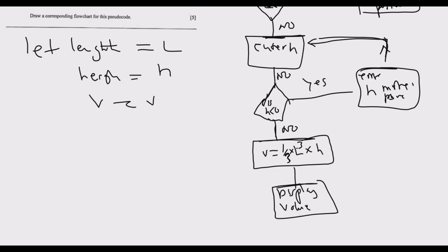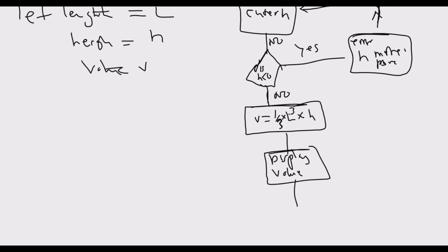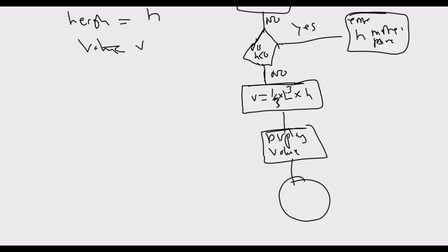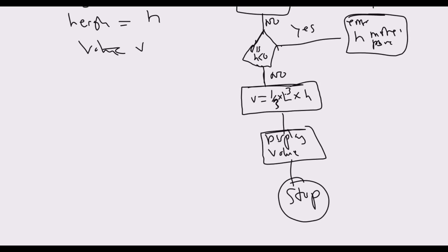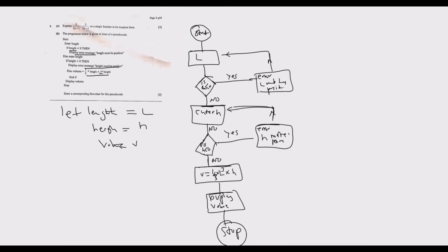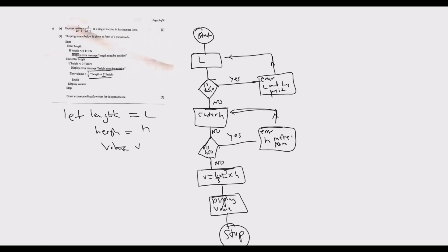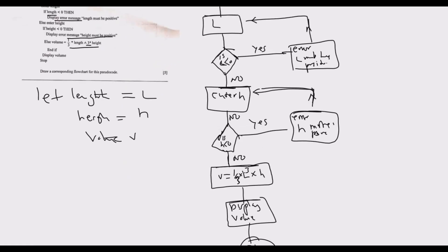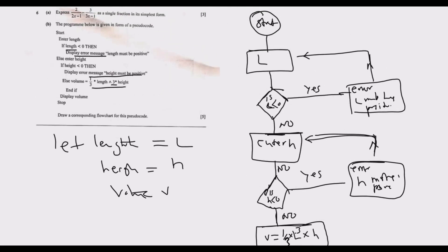Display volume, which is V in this case. Remember volume is equal to V, so we display the volume. Then after I display the volume, what comes next? We stop. We need to stop the calculation, meaning we've achieved what we wanted to do. This is how the flowchart will look like. This is how you answer question 6 to get the full marks.